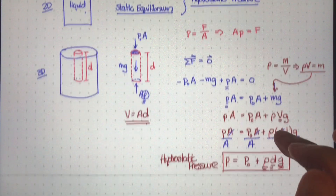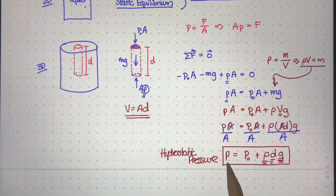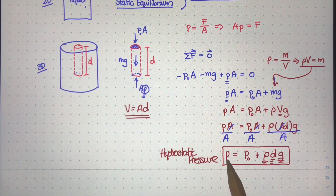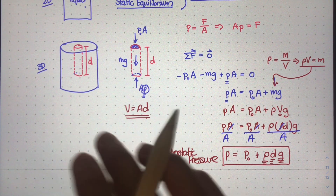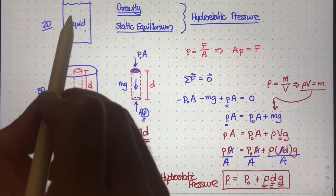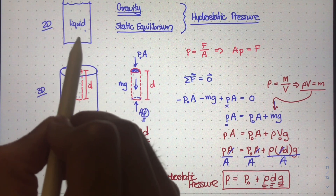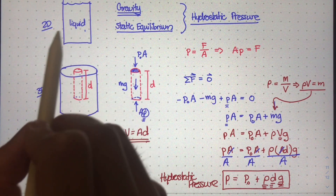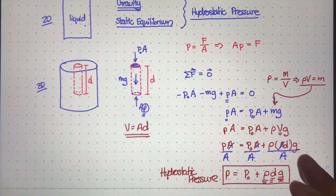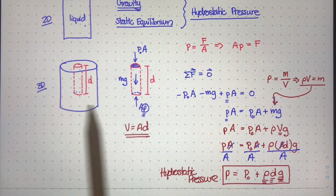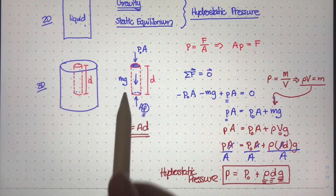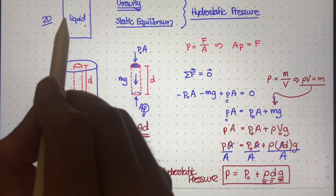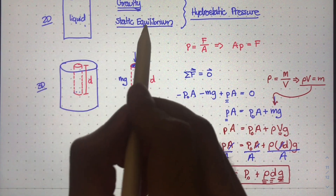Welcome back. In the last video we came to this equation for hydrostatic pressure, and this is really the equation we can use to determine the pressure at any point inside a body of liquid — an incompressible fluid. In this video I want to talk about a few assumptions and some pretty cool things that happen when we study liquids that are in static equilibrium.